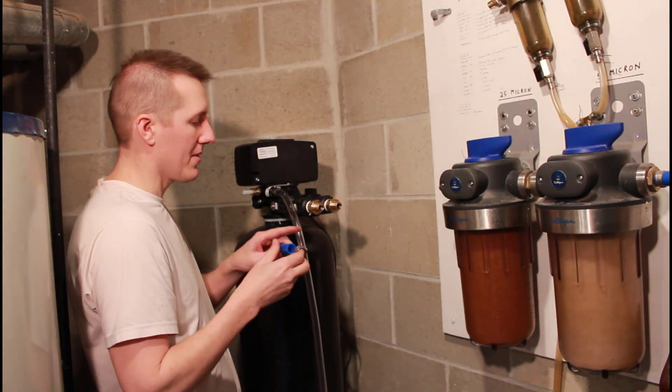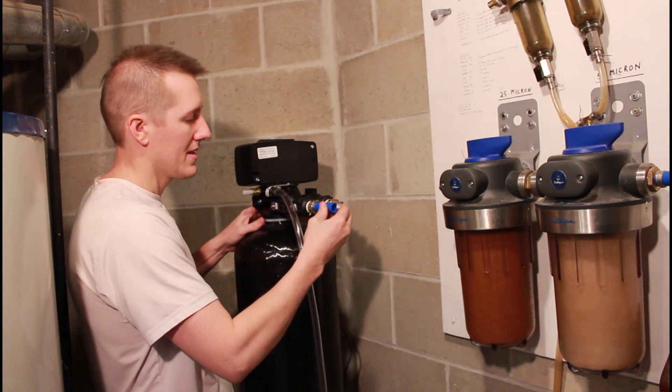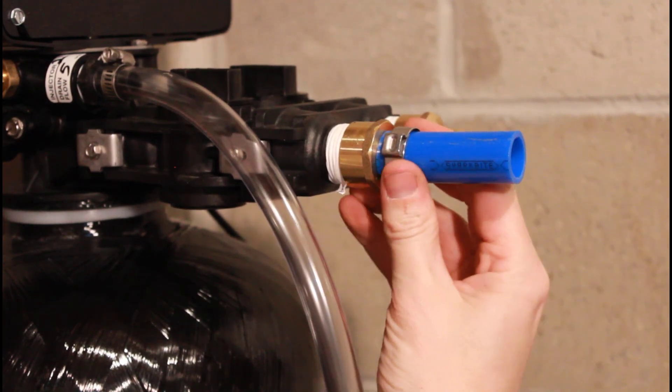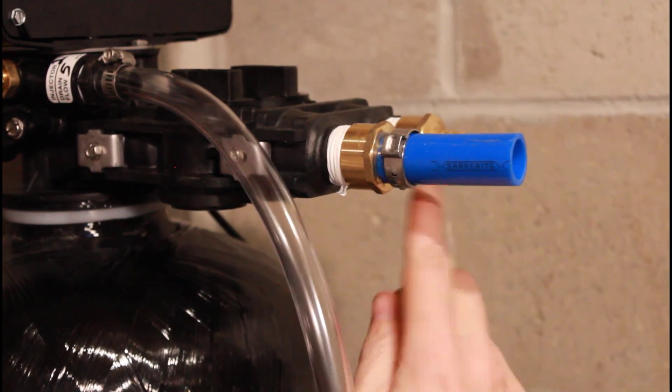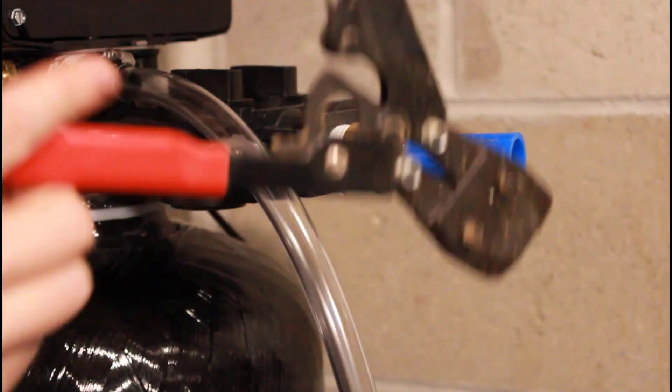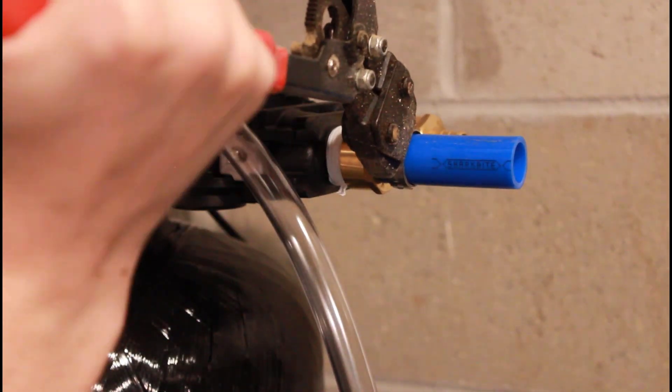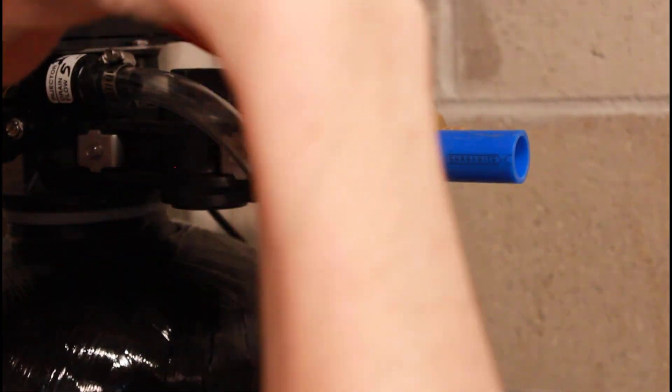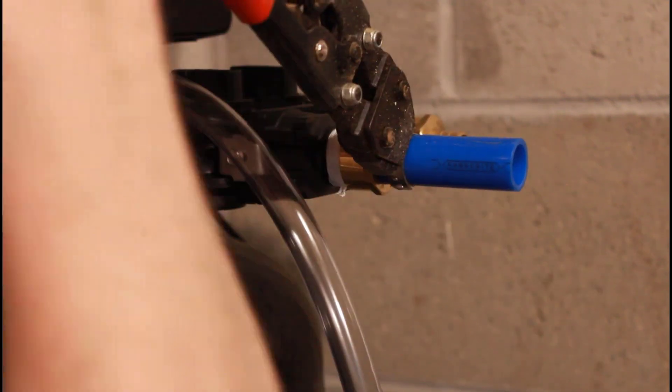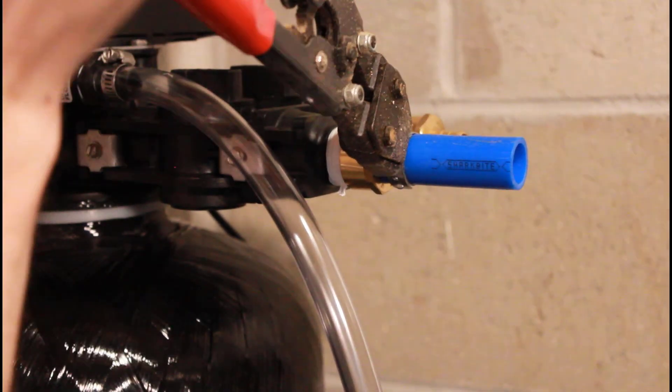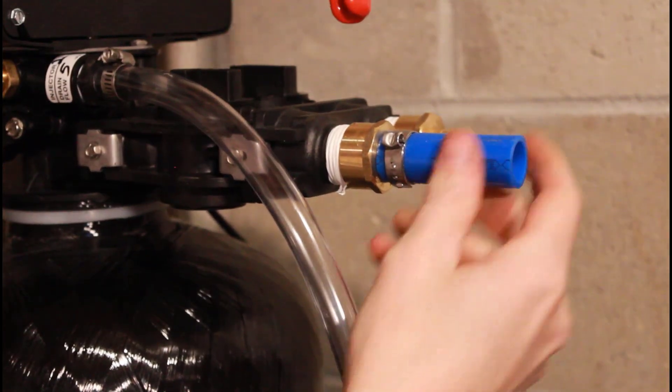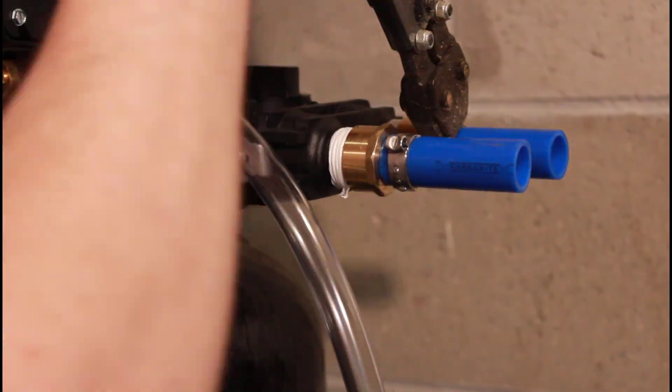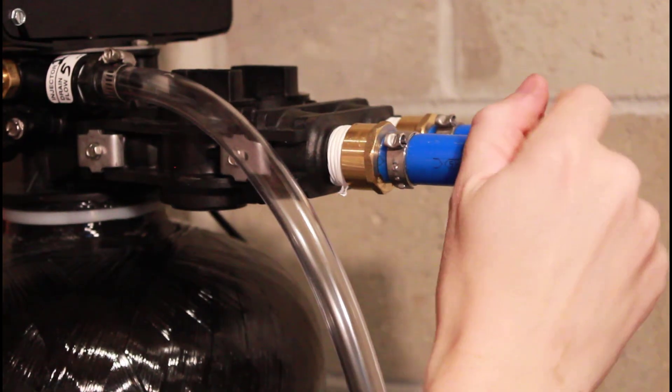To show you how easy PEX is, here's the first fitting. You slide it on, then you slide on your clamp. You get it roughly centered on that fitting. Then you take this tool here, push it on, and just squeeze the clamp. It will not release until it's all the way tight. And there you go. One fitting done. There you go. Two connections done.